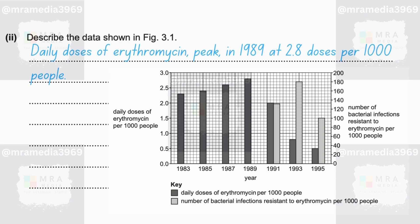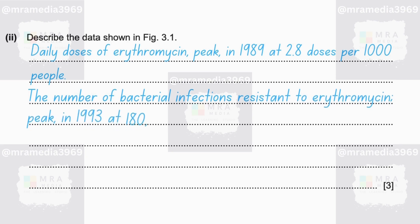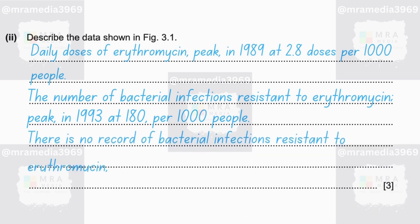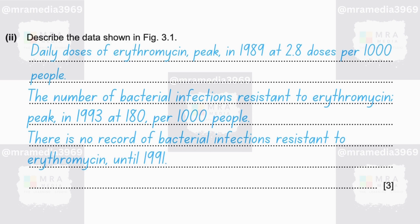Looking at the lighter bars, representing the number of bacterial infections resistant to erythromycin per 1,000 people, this peaks in 1993 at 180. Use the correct axis — remember, it's 180, not 2.7. So we can say that the number of bacterial infections resistant to erythromycin peaks in 1993 at 180 per 1,000 people. Notice that the lighter bars only appear from 1991; therefore, there is no record of bacterial infections resistant to erythromycin until 1991.